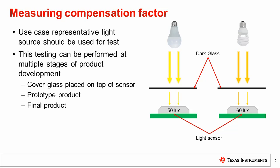This testing can be performed at multiple stages in the product development cycle. At the early stage, the cover glass can be tested by simply placing it on top of the sensor. If a prototype system is available, this can be tested, which also accounts for system level effects like alignment of the glass and other materials like the product case. If a final product is available, this would be used for testing. These cases will now be discussed.